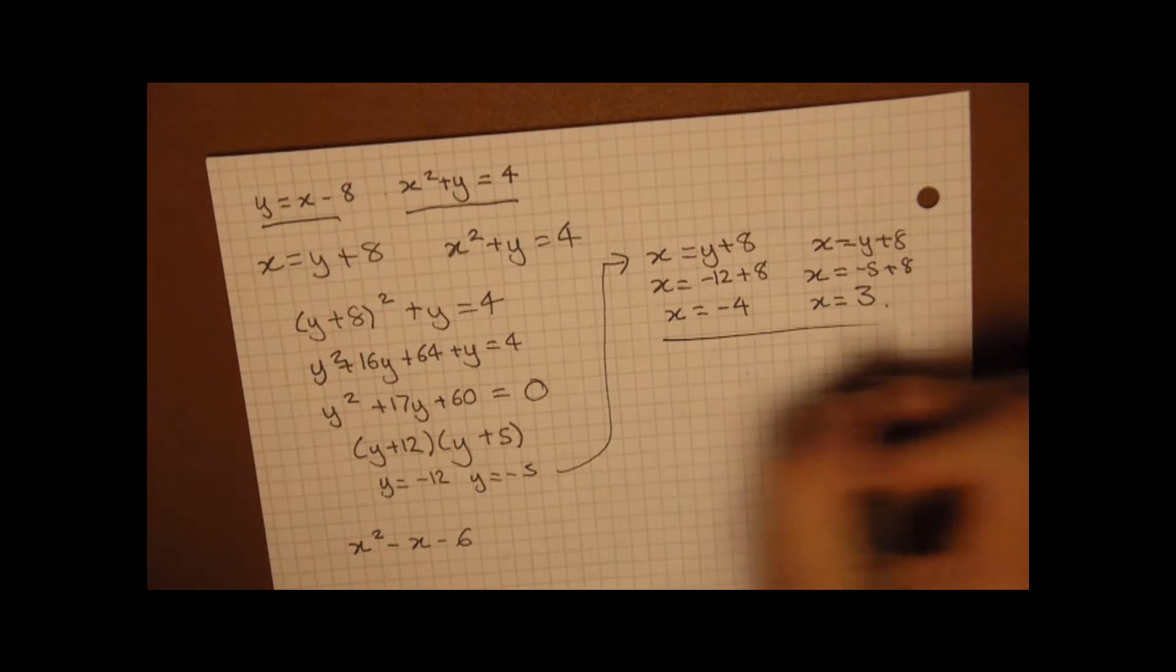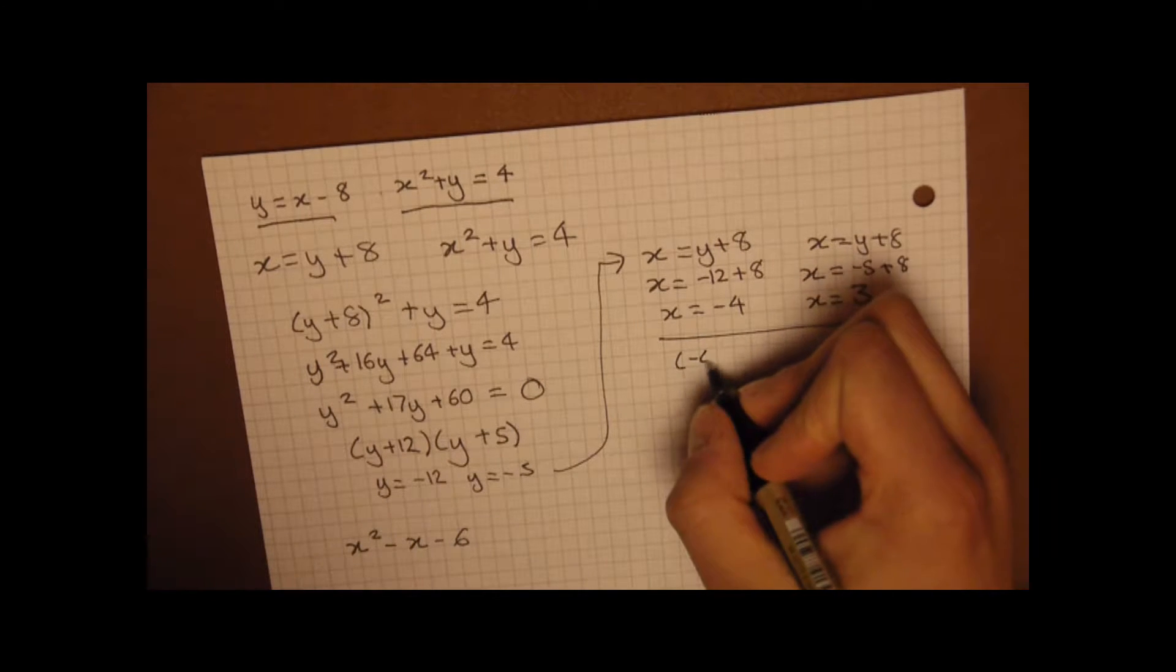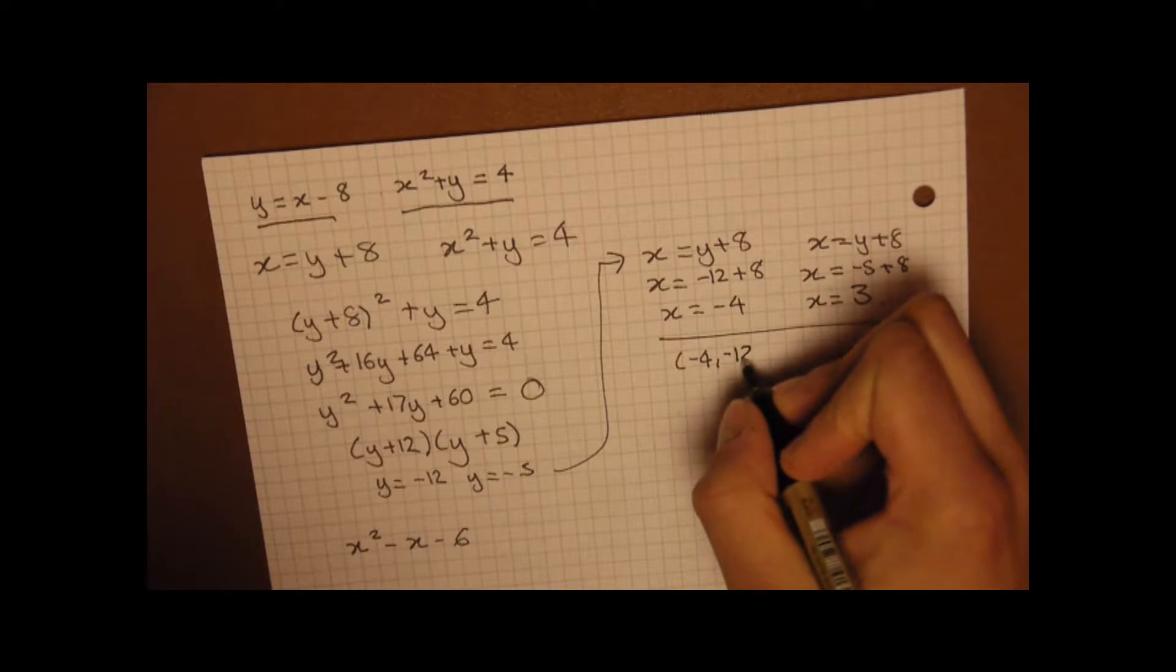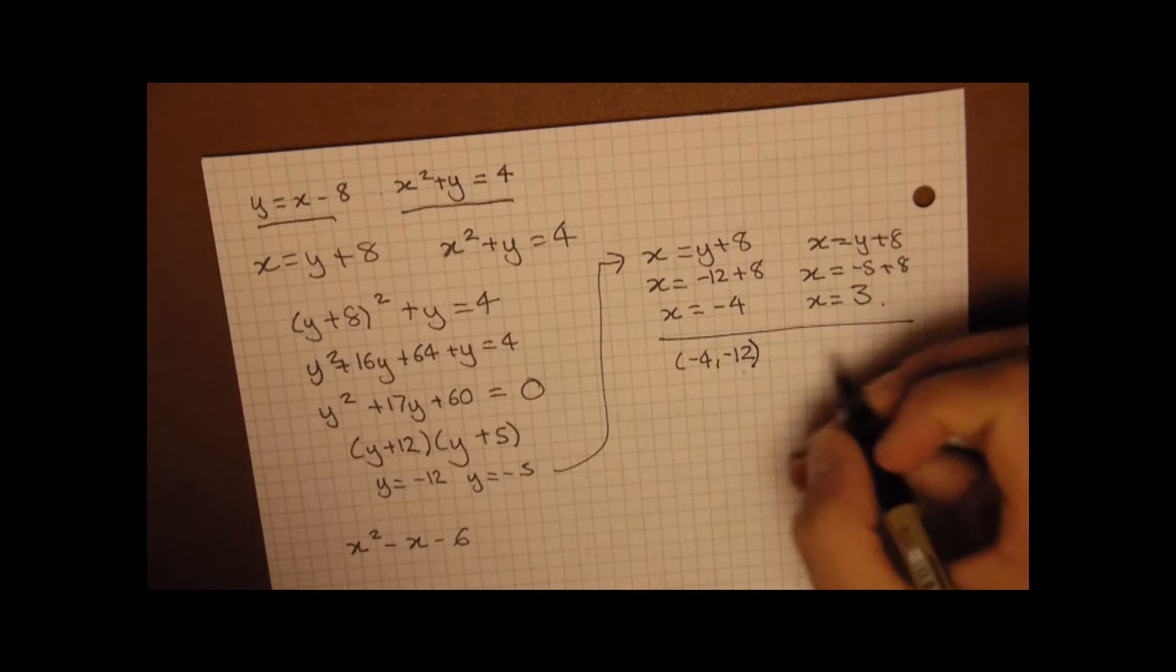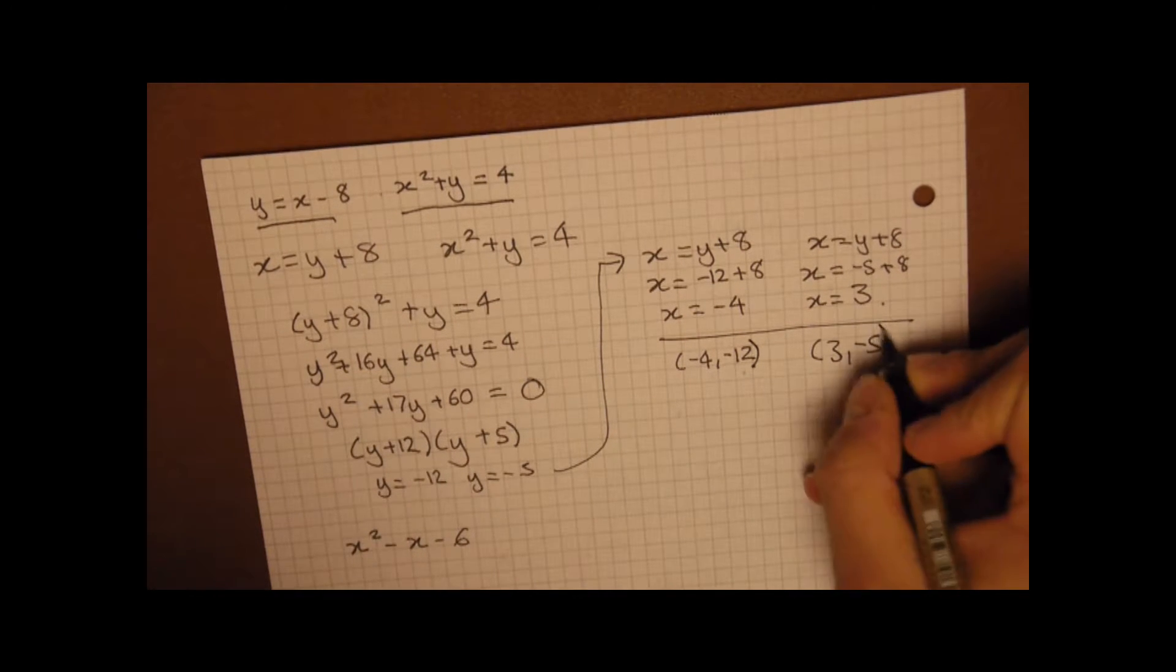Now there you go. Now we have our two terms. So if we're going to put these as coordinates, it's minus 4, minus 12. And also 3 minus 5.